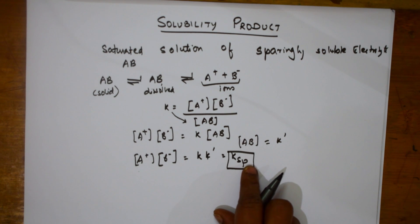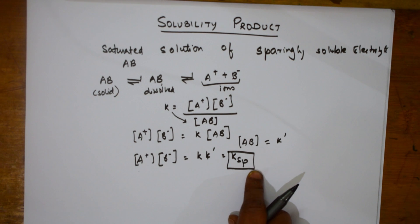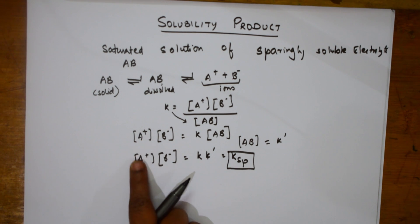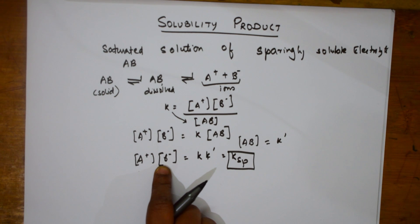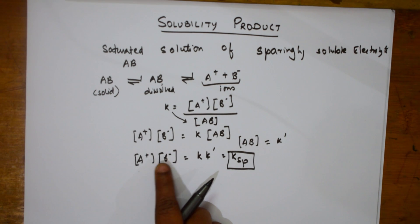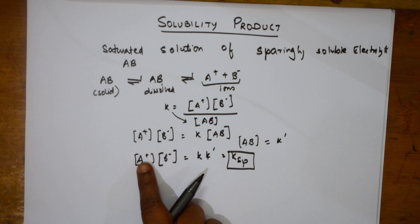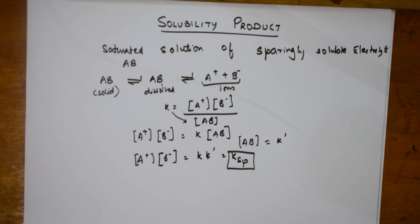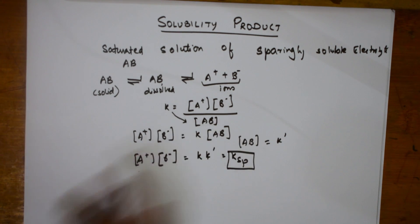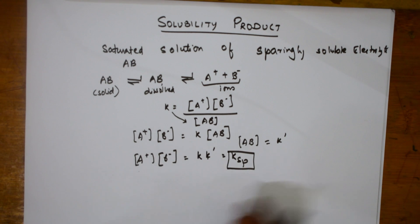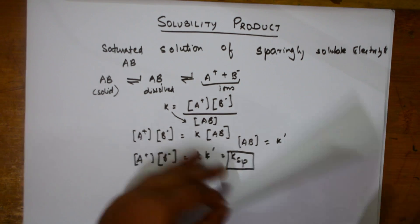Ksp is defined as the product of the molar concentrations of the ions present in the saturated solution, where each concentration term is raised to the power equal to the number of ions present in the chemical equation. So Ksp is a product of the molar concentrations of the ions present in the saturated solution, each raised to the power of the number of those ions.